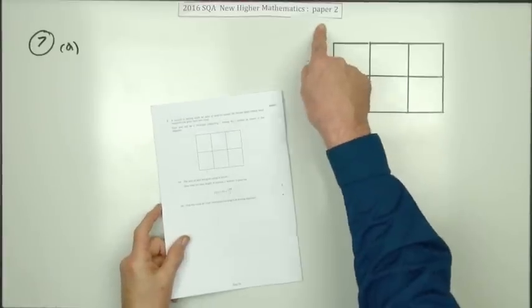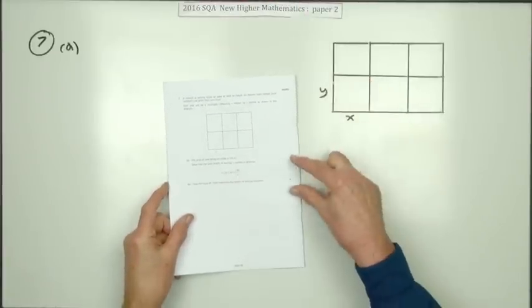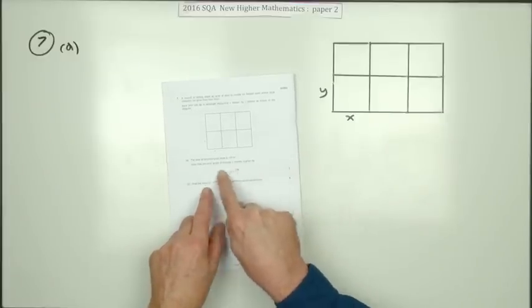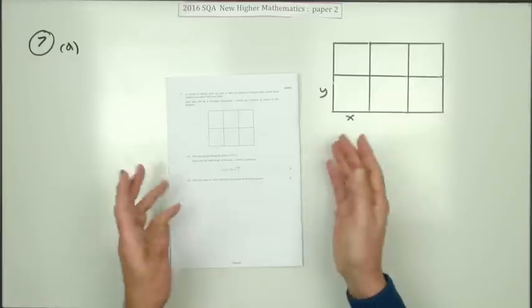So number seven then from paper two of the 2016 Higher Maths there we are, the optimization question nine marks, two parts. First part for three, demonstrate a result. Second part for six, optimize it, let's just find a stationary value basically.